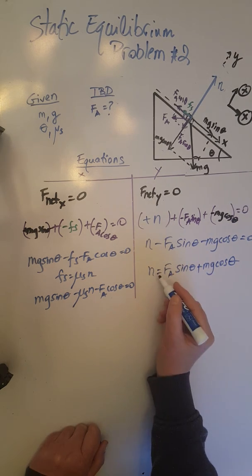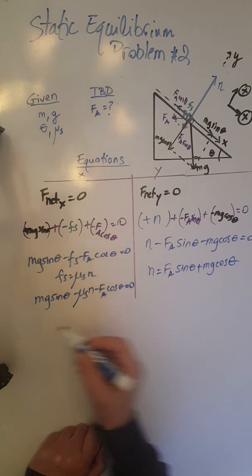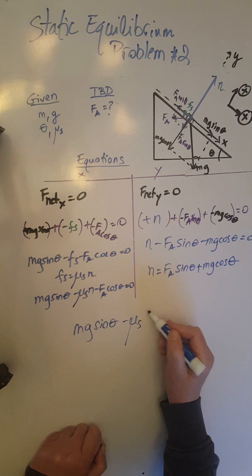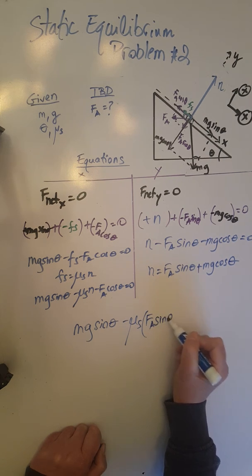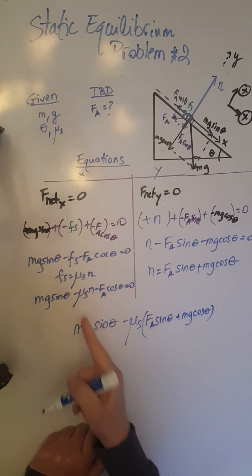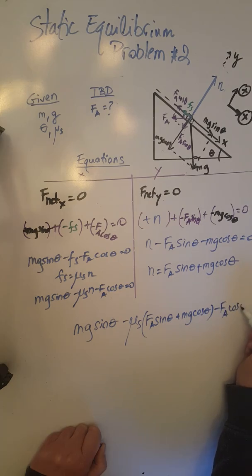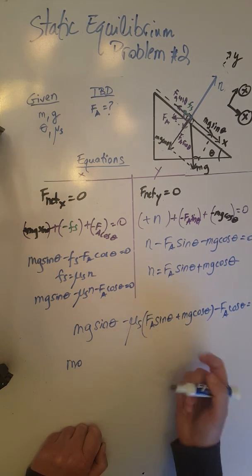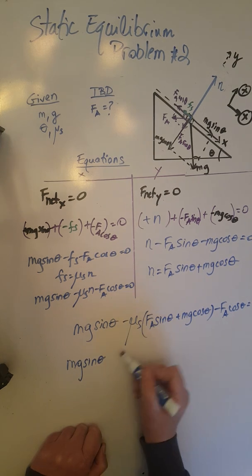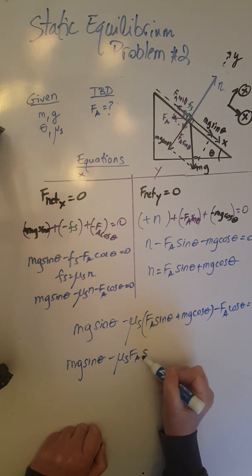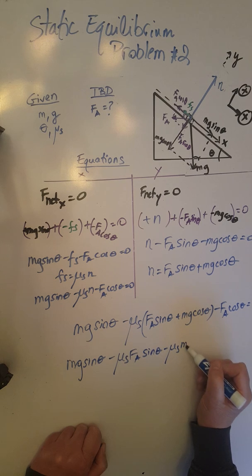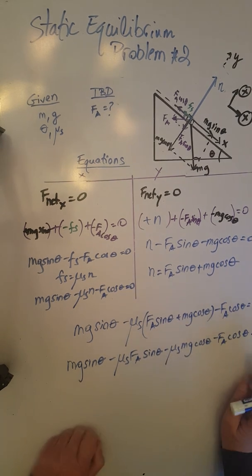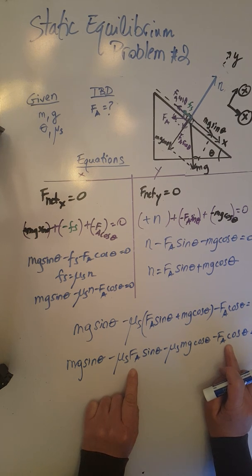Now we take this expression for N and plug it into the x-direction equation. The combined equation becomes: mg sine theta minus mu_s times (F_a sine theta plus mg cosine theta) minus F_a cosine theta equals 0. Distributing negative mu_s through the parenthesis: mg sine theta minus mu_s·F_a sine theta minus mu_s·mg cosine theta minus F_a cosine theta equals 0. Our unknown F_a appears in two of these four terms.